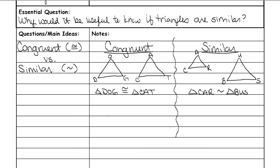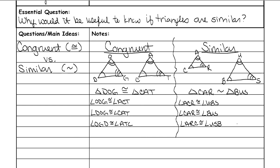You can kind of see visually the difference, but the first thing we need to look at are the angles. They'll be the same for both congruent and similar — the corresponding angles will be congruent for both. Here's a list of all the congruent angles. So that's the angles; they are congruent for both sets, but here's where they get different.